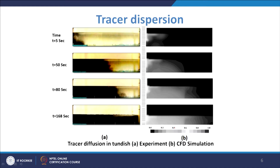An example of tracer dispersion shows how flow progresses — after introducing the tracer continuously, it takes around 168 seconds to fully propagate through. This can also be understood using CFD simulation, which shows how the tracer proceeds and how the concentration changes with time — validating physical modeling results.